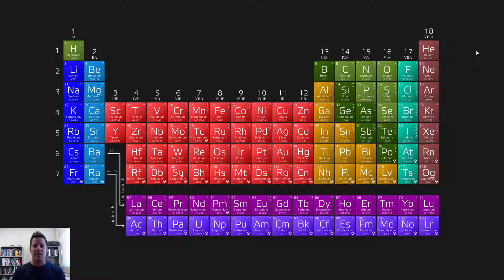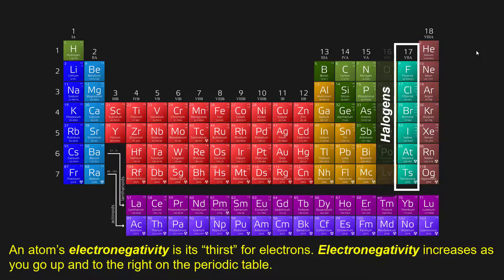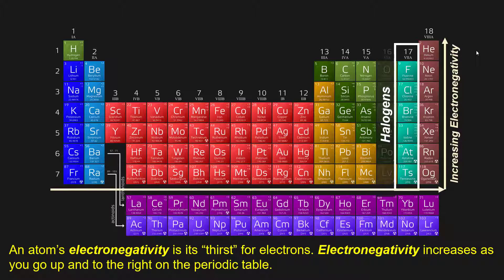As it turns out, on the periodic table, the halogens being all the way to the right are much thirstier for electrons. They want electrons, because by gaining just one electron, they can shift one column to the right and feel like a noble gas. It should follow then, that an atom's electronegativity, being its thirst for electrons, increases as you go up and to the right on the periodic table.